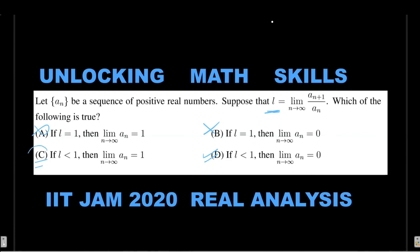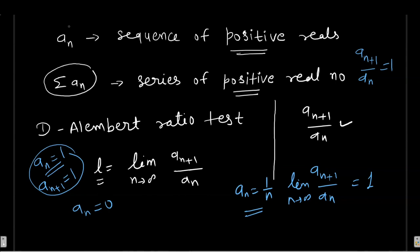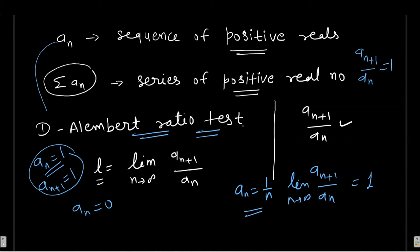For this question, you need two concepts. Once you understand the concepts, the question becomes very easy. The key concept is the limit and ratio test. With these concepts, the question becomes very easy. You can provide a counter example.